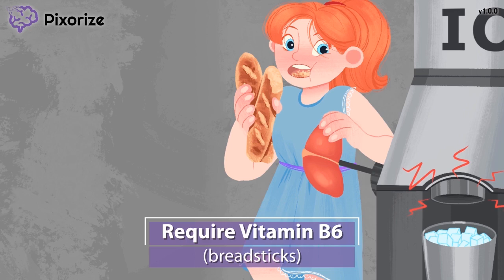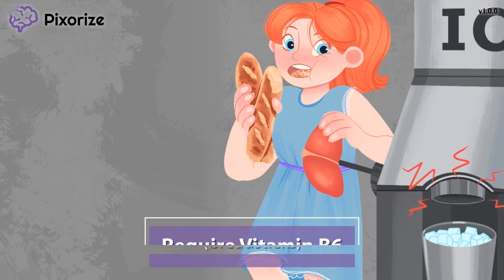Isoniazid interferes with vitamin B6, also called pyridoxine. So patients will often require vitamin B6 supplementation. By supplementing the vitamin B6, the patient can avoid the side effect of peripheral neuropathy.